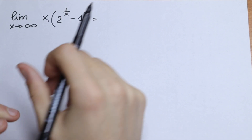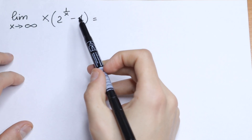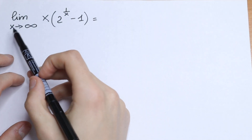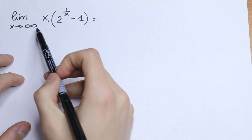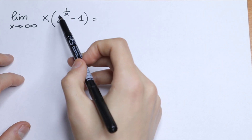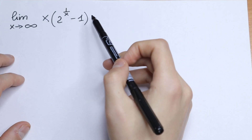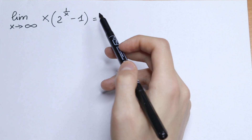Hello everyone, welcome back to Higher Mathematics. Today we have an interesting limit: what is the limit as x approaches infinity of the function x times 2 to the power 1 over x, minus 1?